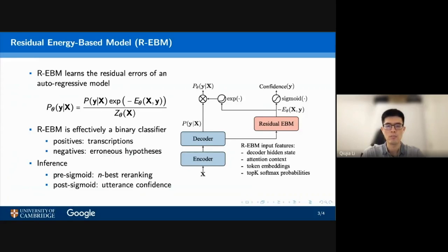Because the partition function Z_θ in the denominator is intractable, noise contrastive estimation is used. As the R-EBM is self-normalizing, the joint model P_θ(y|x) is globally normalized across all hypothesis sequences.